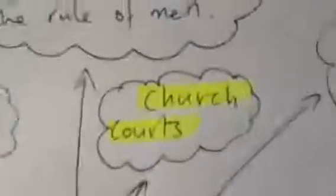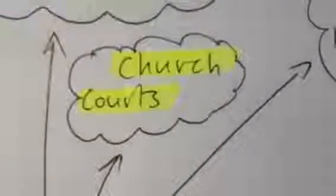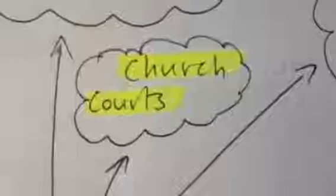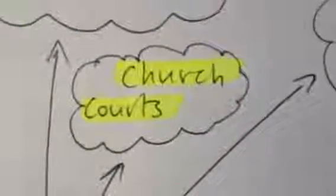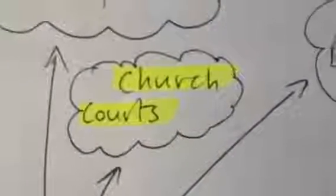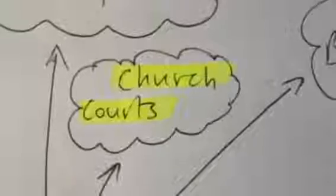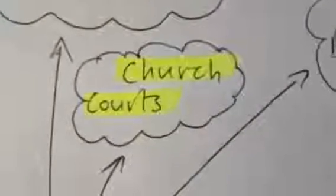And they also introduced church courts, which were courts specifically for people who claimed benefit of clergy or for those people who were involved in the church, i.e. priests or monks, so that they could be tried by a church court. And church courts were much more lenient. They didn't give the death penalty. They gave far easier punishments out.